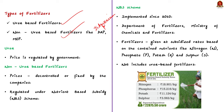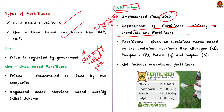Urea, a nitrogen fertilizer, is the only fertilizer whose price is regulated by the government, provided to farmers at a statutorily notified price. Non-urea fertilizer prices are fixed by companies, but farmers are not burdened because they are regulated under the nutrient-based subsidy (NBS) scheme. The NBS scheme has been implemented since 2010 by the Department of Fertilizers under the Ministry of Chemicals and Fertilizers. Under the scheme, fertilizers are given at subsidized rates based on their contained nutrients — nitrogen, potassium, potash, and sulfur. It does not include urea-based fertilizers, and fertilizers fortified with micronutrients like molybdenum and zinc receive additional subsidy.